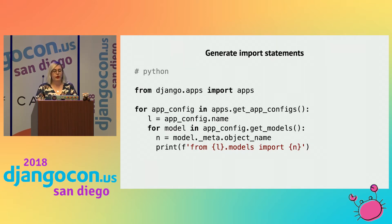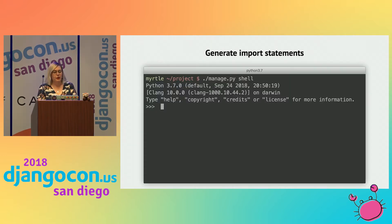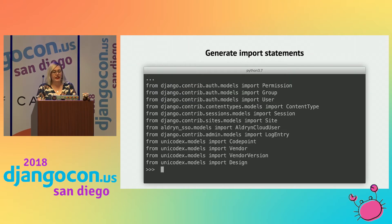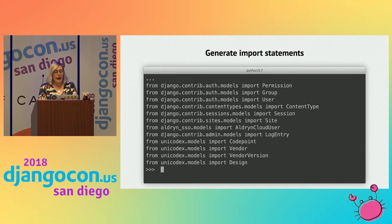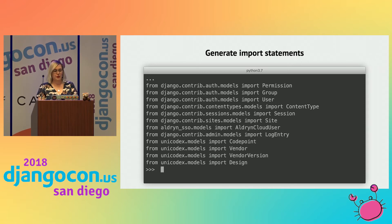All I'm doing is going through all the apps of my project, getting all the models for those apps, and for all those models generating an import statement. If I go back to my terminal and paste this code, I end up getting a whole bunch of useful import statements. As a new Django developer, this is so very helpful. By looking at this, I can see that Django has a bunch of models, and I can also see something called Unicodex, which matches my project name — those are probably the models I'm most interested in.